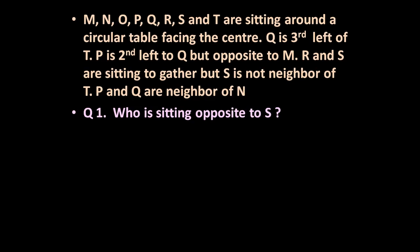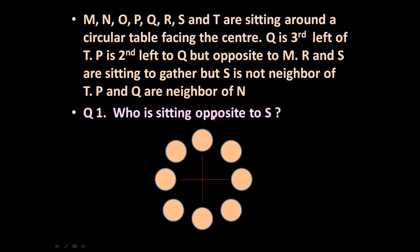In this question eight persons are there: M, N, O, P, Q, R, S and T, and they are sitting around a circular table facing the center. So let us draw a circular table with eight positions: 1, 2, 3, 4, 5, 6, 7, 8 — sitting around a circular table facing the center.